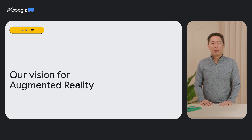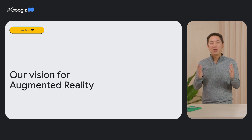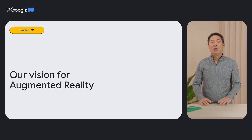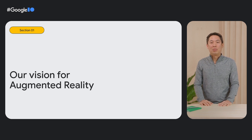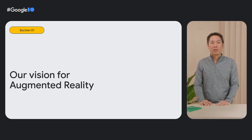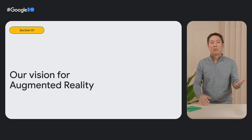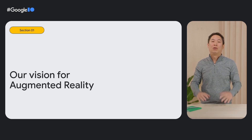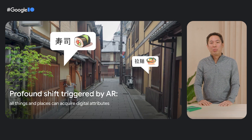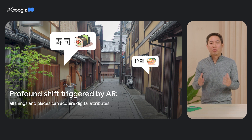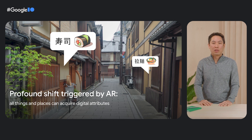First, our vision for augmented reality. Augmented reality, or AR, is a technology that seamlessly blends the physical and digital worlds, enabling developers to place and users to interact with digital content in their physical surroundings. For instance, AR makes it possible to blend in virtual text, objects, or even entire scenes with reality. We believe that the profound shift triggered by augmented reality is that all things and places can acquire digital attributes.